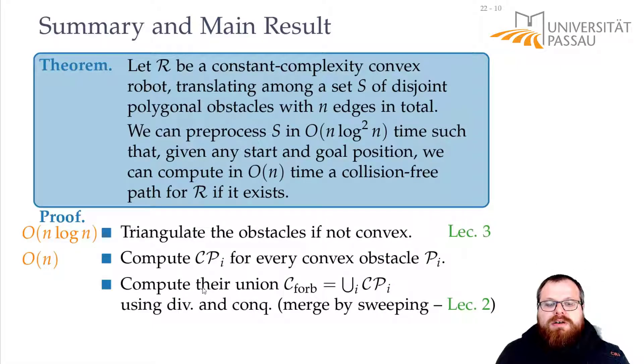So, in our divide and conquer, we divide it into log n levels. And we need O(n log n) time for each of them. So, this whole thing takes O(n log² n) time. This is where the squared n comes from.